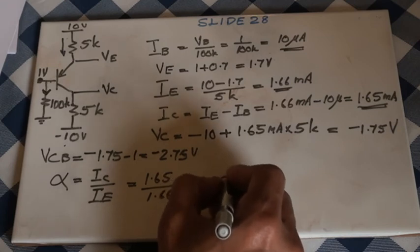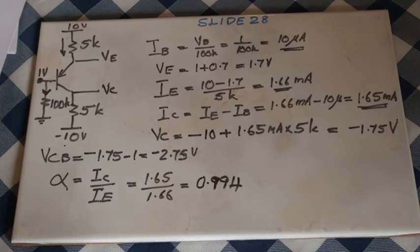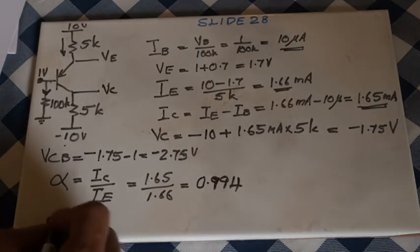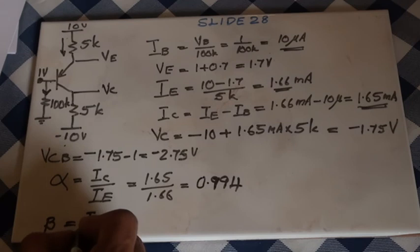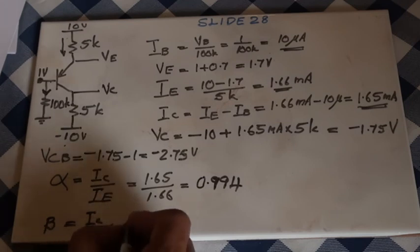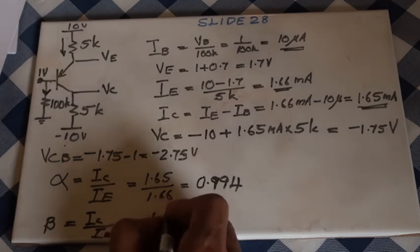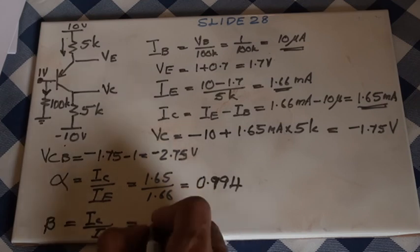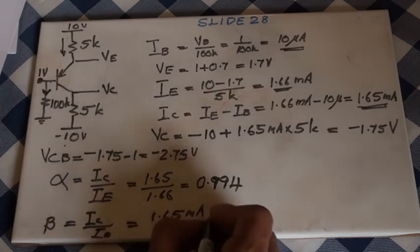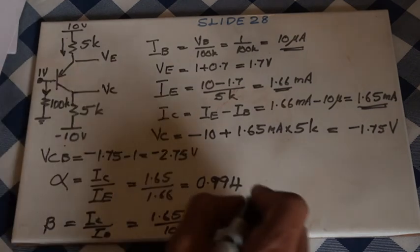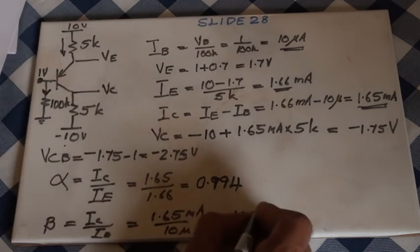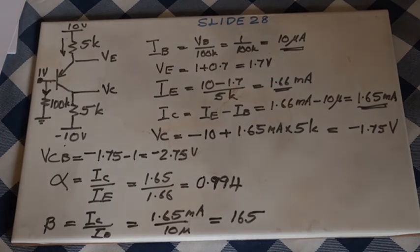Alpha equals 0.994. Beta is IC over IB: 1.65 milliamperes divided by 10 microamperes - answer is 165. See, we only had one voltage given, and we worked out three different currents and two different voltages.